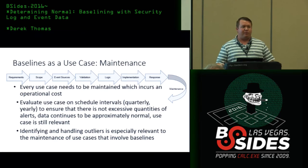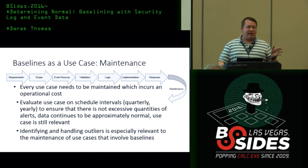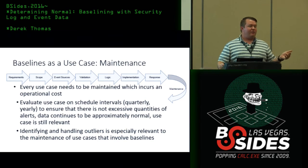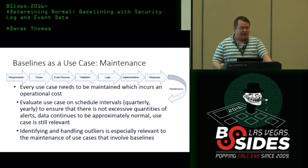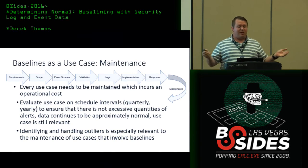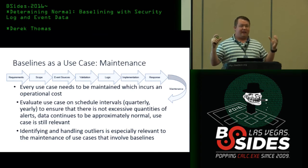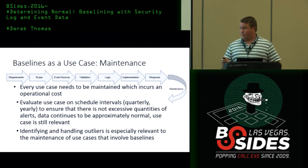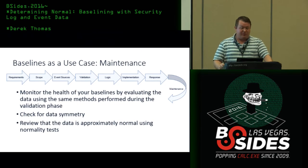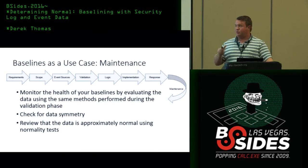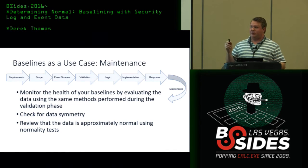The maintenance phase is a little more involved for baselines. Every use case needs to be maintained — organizations often have rules but don't know if they've ever triggered or are correctly configured. Evaluate use cases on some interval: monthly, quarterly, semi-annually, or annually. This is also where you identify and handle outliers and determine whether the data is still normal. I'm showing 30 days, but over 180 days things will definitely change. For this phase, primarily focus on monitoring the health of your baselines by evaluating the data the same way we did before — looking at whether it's still normally distributed and relevant. Here's a graph of p-values over 101 baseline days — anything above 0.05 is good.